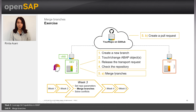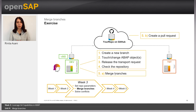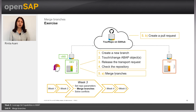Now it's exercise time. We will do the exercise together and I will show you the steps. The first step is to create a new branch. The second step is to make some changes to ABAP objects. The third step is to release the transport request. The fourth step is to check the repository that the commit is there. In the fifth step, we will merge the branches on the local repository using the GCTS app, and on the remote repository by creating a pull request.